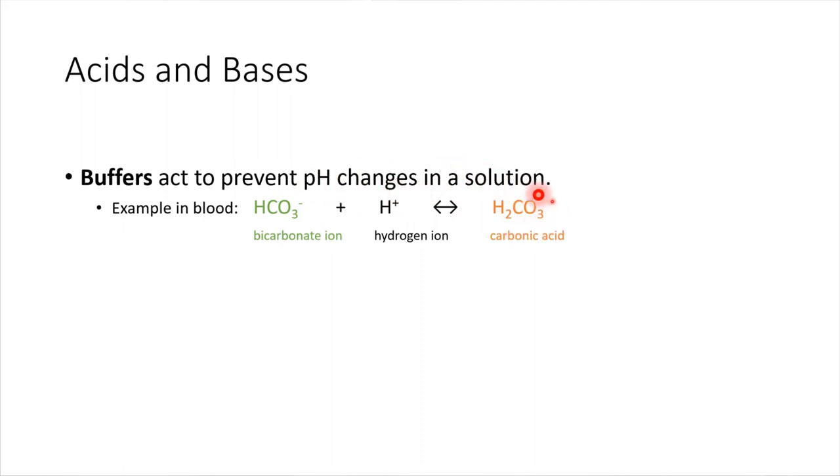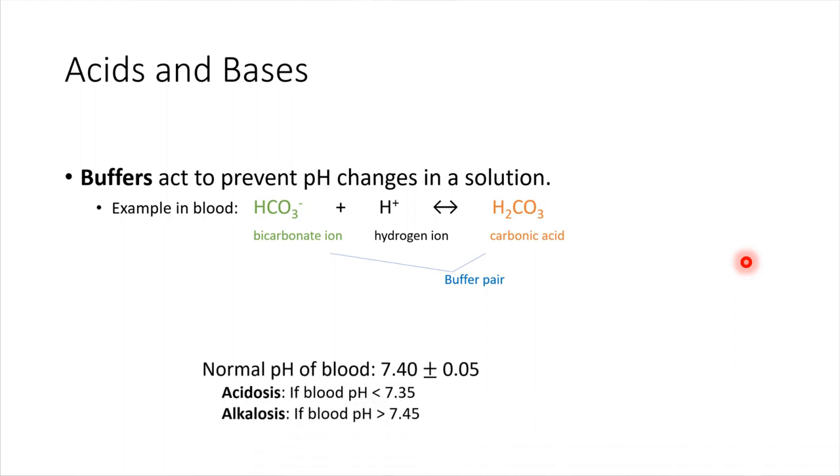So if we have carbonic acid present in our blood, and let's say the blood starts to get too basic, so we need more protons present, what carbonic acid can do is donate its proton. It can donate this one back into solution and help to buffer changes in pH in the blood. So these two substances together are what we would call a buffer pair, and they help to maintain the normal pH of blood.